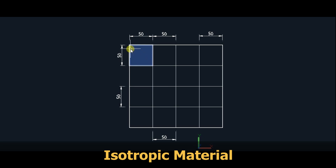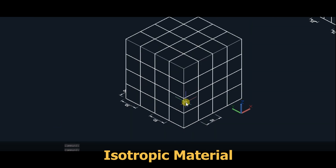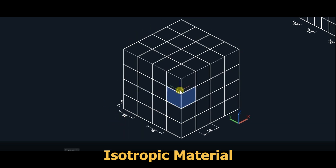Even if you consider another direction at an angle — with either horizontal or vertical — there also the Young's modulus must be same. In general, the property must be same in all directions. Now if you consider it in 3D, then also for an isotropic material, the properties in the X direction, Y direction, and Z direction — all three directions must be same. Then such a material is called as an isotropic material.